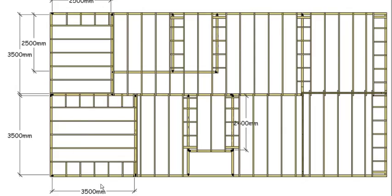These joists here are spanning 3.5 meters. The joists on this side of the house are spanning 3.5 meters, except for the few in the entryway here which are 2.4, and all the joists on this side of the house are spanning 3.5 meters. Most of the joists are single span because they're joined here and sit on the wall. The only ones that are continuous span are the ones sitting on this wall, so they're continuous from that wall over to this wall.